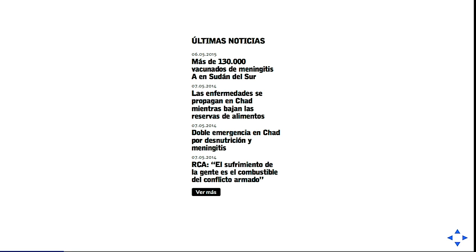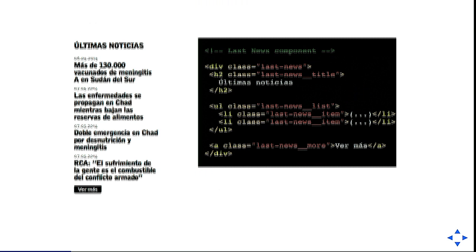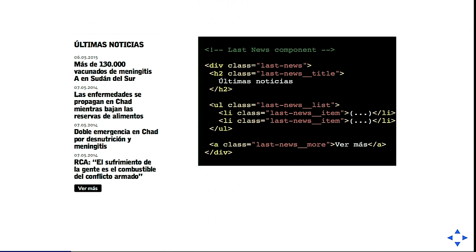How can we improve all that with components? A component is any predefined object reusable across multiple pages — it can also be known as a widget, block, or module. It's an independent entity with its own meaning. For example, it might have a title, a list, and a read more button, but it's independent from the other parts of the page.